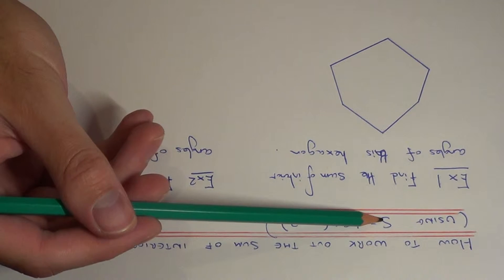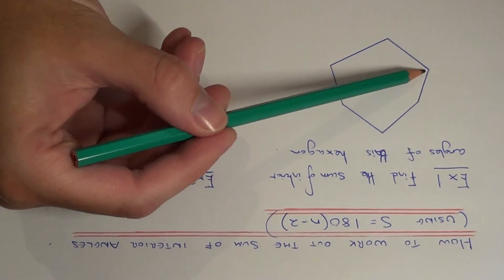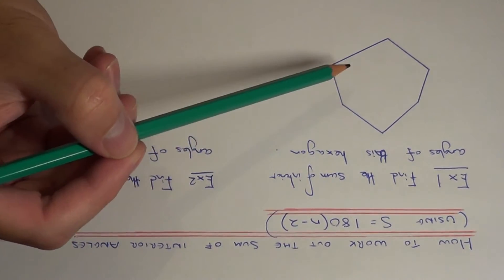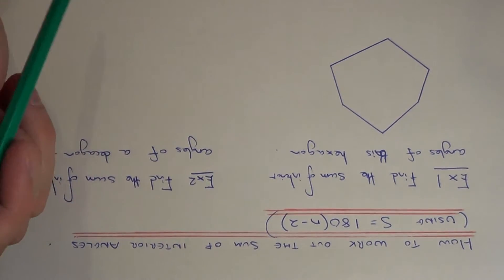So S is the sum of interior angles, this is what all the angles inside your polygon add up to, and N is the amount of sides which the polygon has.